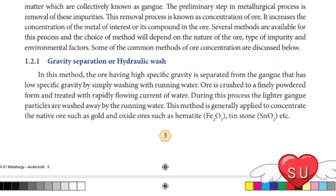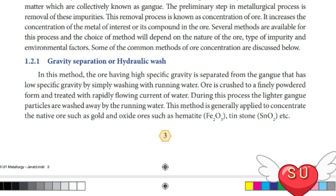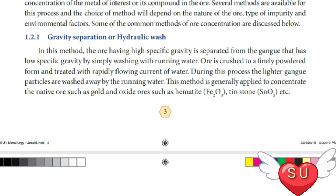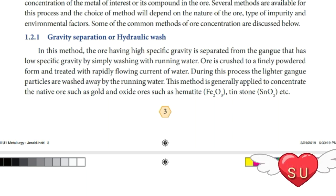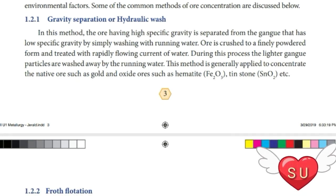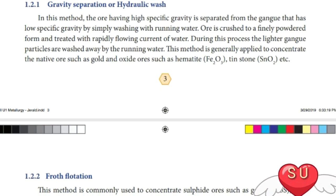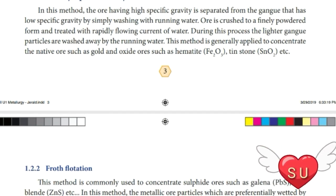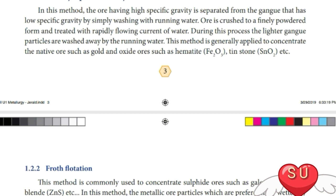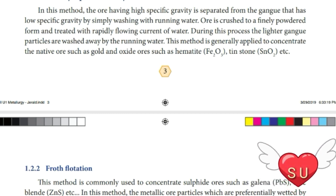There are several methods used for the concentration of ores. The choice of method will depend upon the nature of the ore, the type of impurity, and environmental factors. The first method is gravity separation or hydraulic wash. This method is based on the difference in specific gravity. The ore, having high specific gravity compared to the gangue which has low specific gravity, is separated by simply washing with running water. First, the ore is finely crushed to a powdered form and treated with rapidly running water. During this process, the lighter gangue particles are washed away and the heavier particles settle down. This method is used to concentrate native ores and oxide ores.